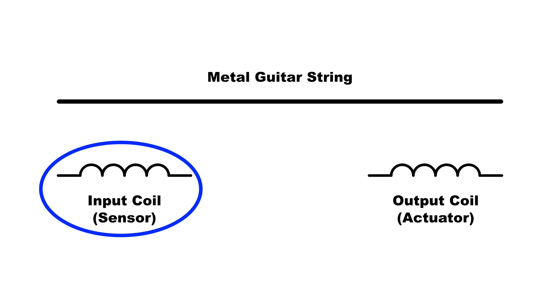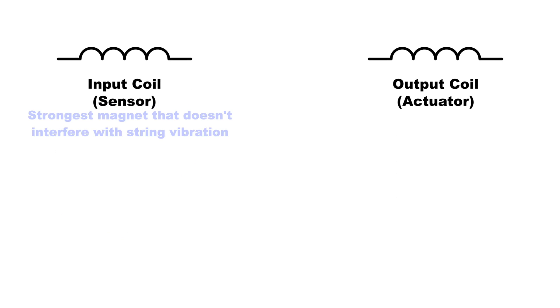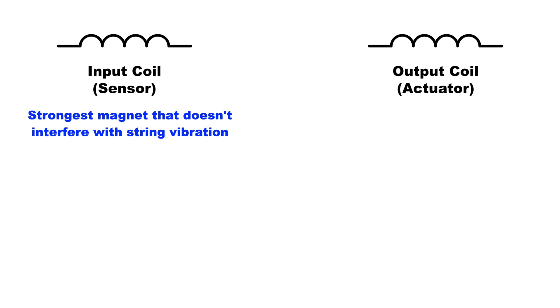So just to summarize for the input coil: you want the strongest magnet that doesn't interfere with the vibration of the string and you want as many turns of the thinnest wire that you possibly can work with.